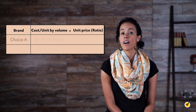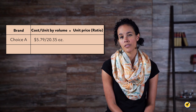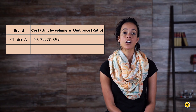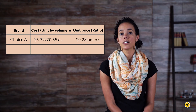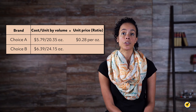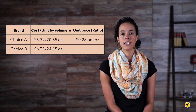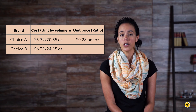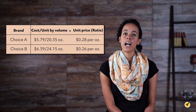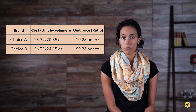Brand A costs $5.79 and has a volume of 20.35 ounces. Dividing the price by the volume gives us the cost of the cereal per ounce — 28 cents. Brand B costs $6.39 and has a volume of 24.15 ounces. Dividing the price by the volume gives us 26 cents per ounce. Despite being a higher cost per package, choice B is a better value by unit price.